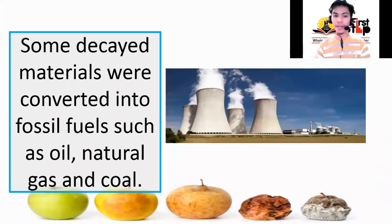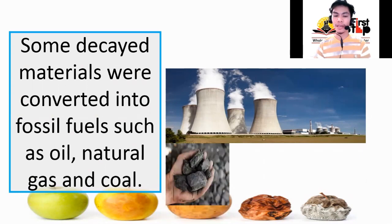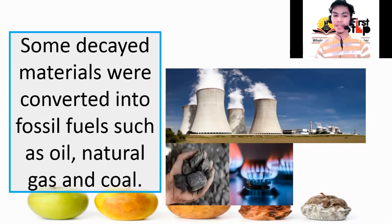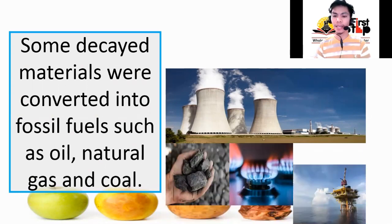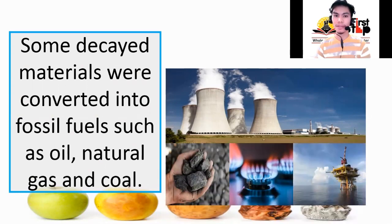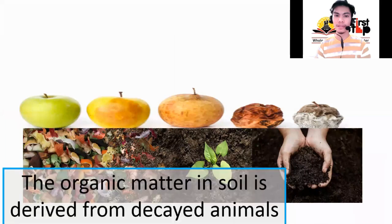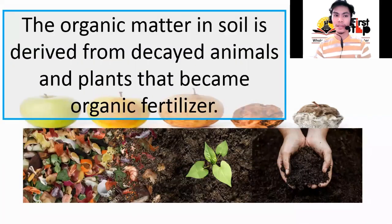Some decayed materials were converted into fossil fuels such as oil, natural gas, and coal. The organic matter in soil is derived from decayed animals and plants that became organic fertilizer.